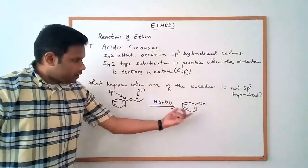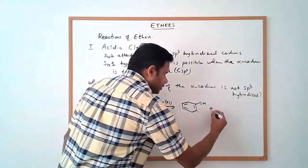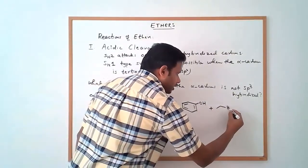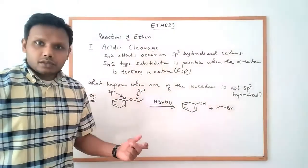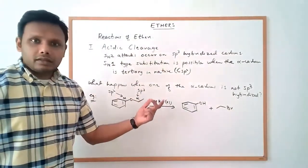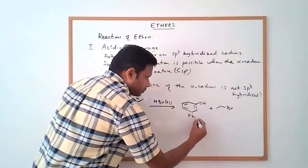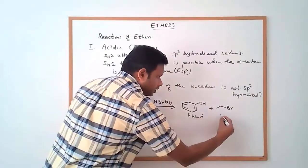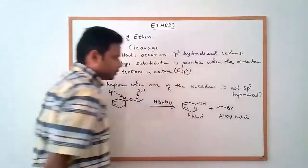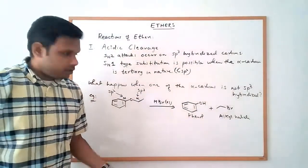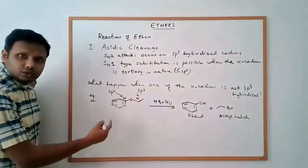Our products are going to be an alcohol — in this particular case it's a phenol — plus an alkyl halide. We will not get two alkyl halides. So we get a phenol and an alkyl halide. The mechanism of the reaction has the answer for why that happens.